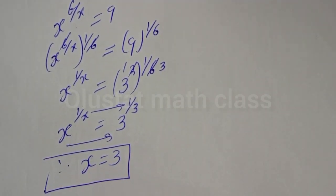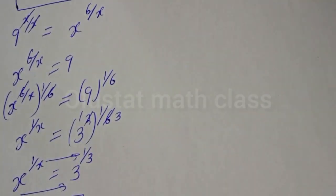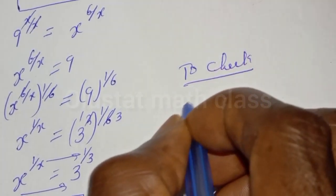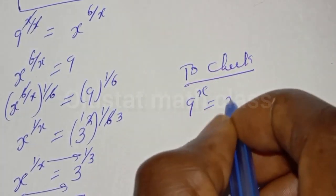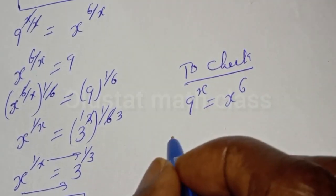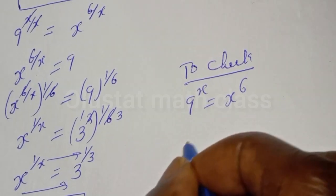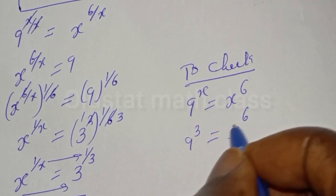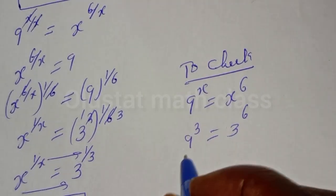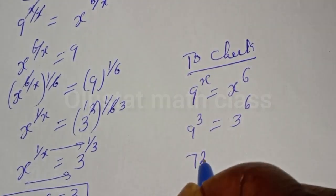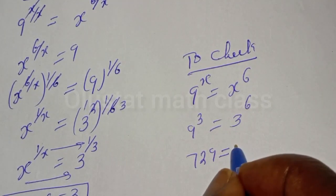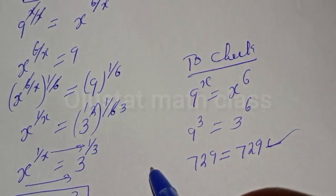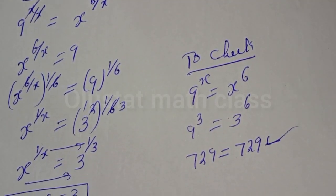We can check to confirm if our answer is right or wrong. Let's check. If you have 9 raised to power s is equal to s raised to power 6, then when s is 3, we have 9 raised to power 3 must be equal to 3 raised to power 6. Now, 9 raised to power 3 is 729, equal to 3 raised to power 6 which is 729, which satisfies the given equation at s is equal to 3. Thank you for watching.